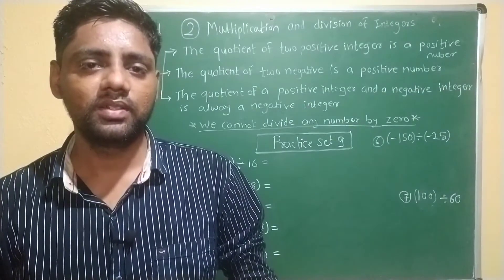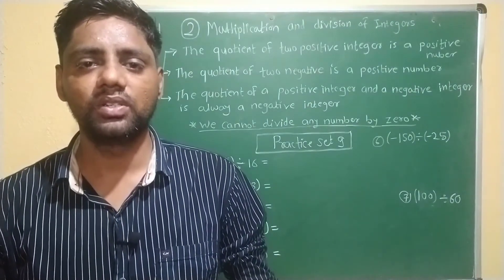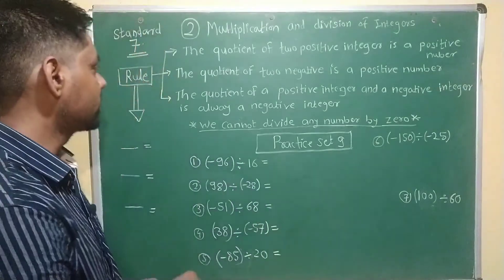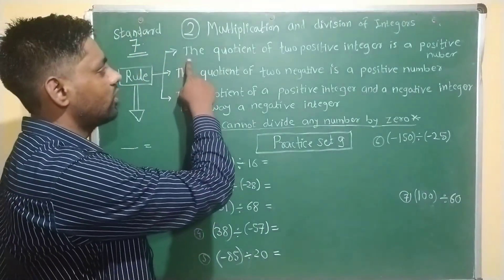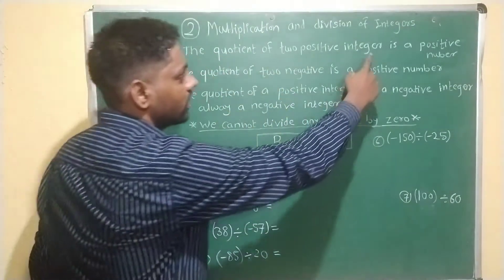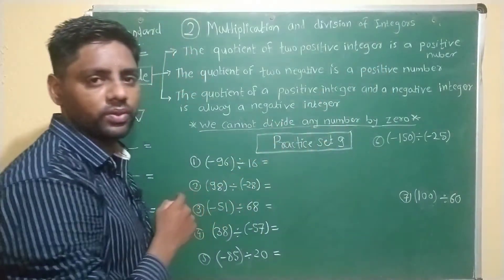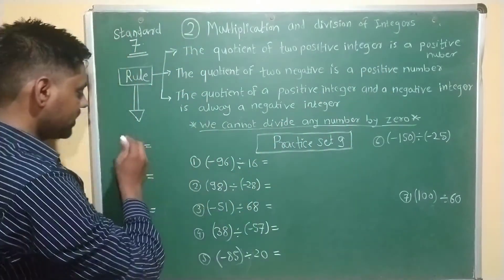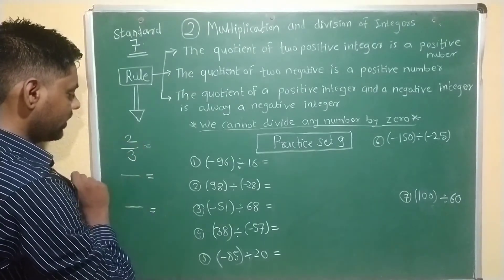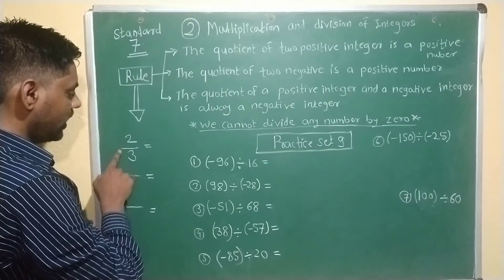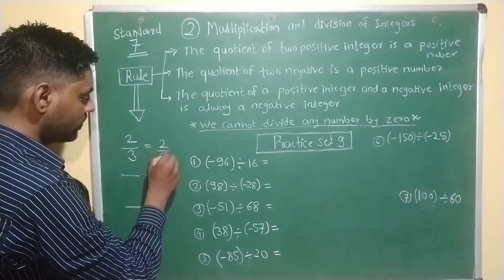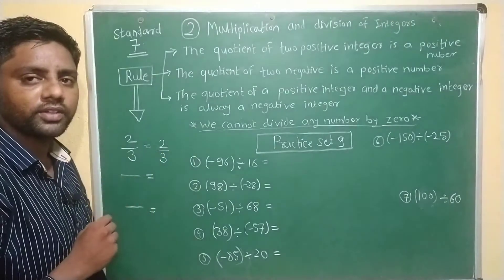Now we have seen the division of integers. For that, remember 3 basic rules. First rule of division of integers: the quotient of 2 positive integers is a positive number. We take the example 2 divided by 3 — the quotient of 2 positive integers is always a positive number.